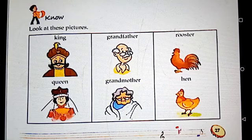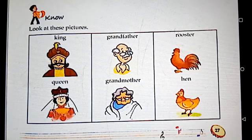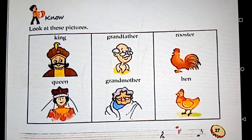These nouns are of different gender — that is male gender and female gender. The nouns king, grandfather, and rooster are male gender. And the nouns queen, grandmother, and hen are female gender.